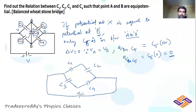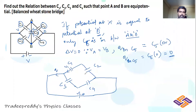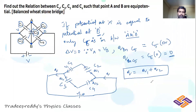With these four capacitors remaining, if the battery draws charge Q from C1 and C3, then Q1 charge will be drawn from one branch and Q2 from the other. Since C1 and C2 are connected in series, they carry the same charge Q1. Since C3 and C4 are connected in series, they carry the same charge Q2. Overall, Q = Q1 + Q2.